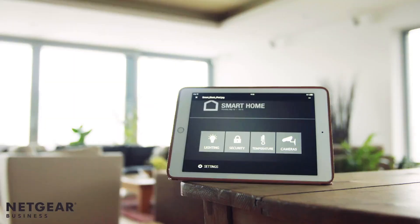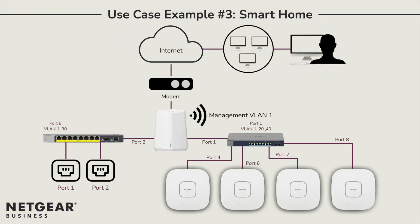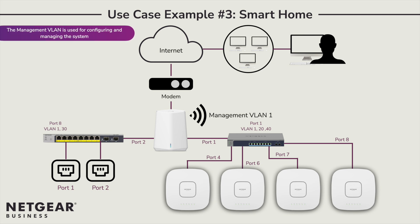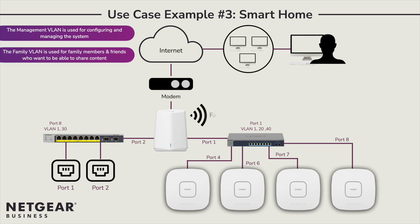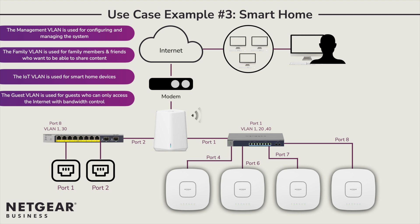The third use case is a smart home which incorporates four VLANs. The management VLAN is used for configuring and managing the system and therefore has full access to every host. The family VLAN is used for family members and close friends who want to share content such as photos and media. The IoT VLAN is used for smart home devices such as IP cameras and network video recorders. And finally, the guest VLAN is used for guests who can only access the internet with bandwidth control.